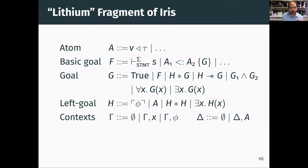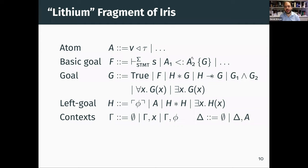At the same time, we do allow embedding of arbitrary Iris propositions using the leaves of the goals — these basic goals F and the atomic formula A. Things like the statement typing judgment, the subsumption judgment, and the type assignment atom are all modeled internally using the full features of Iris. But we give rules to guide their proof search, which the general automation of Lithium doesn't need to care about.